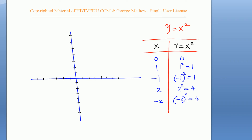When you substitute x = 0, we get zero. When you put x = 1, we get one. When you substitute x = negative one, we get the same output, one. When you substitute x = 2, we get four. When you substitute x = negative two, we also get four. This graph is symmetric about the y-axis.